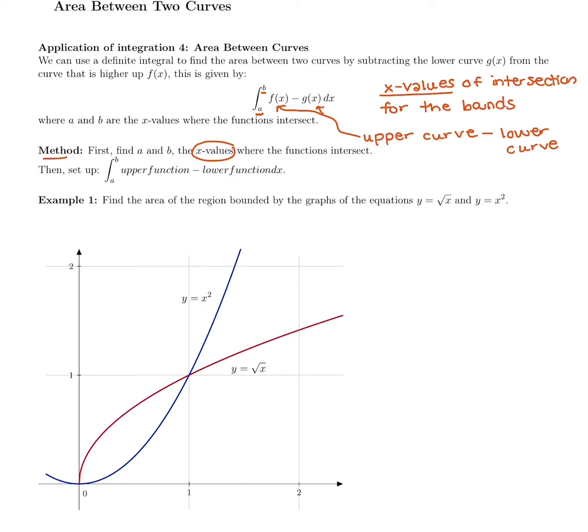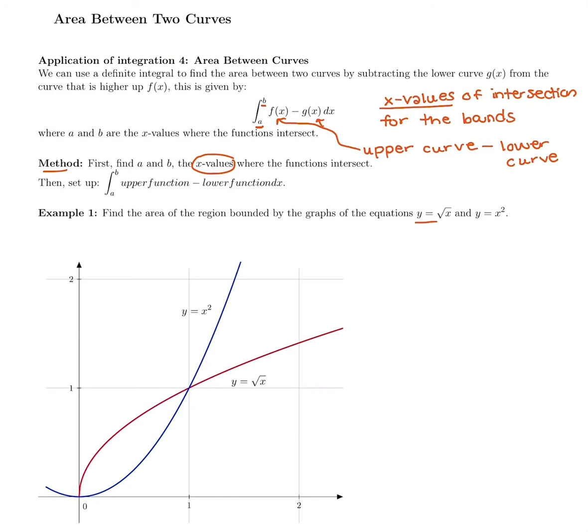The new part of this section is setting up our own function. What's new is figuring out what are the x-values that we intersect at, and which one would we consider the upper curve and the lower curve on that interval. Looking at this example, we want to find the area of the region bounded by y equals the square root of x and y equals x squared. Looking at this graph, they intersect at 0 and at 1.